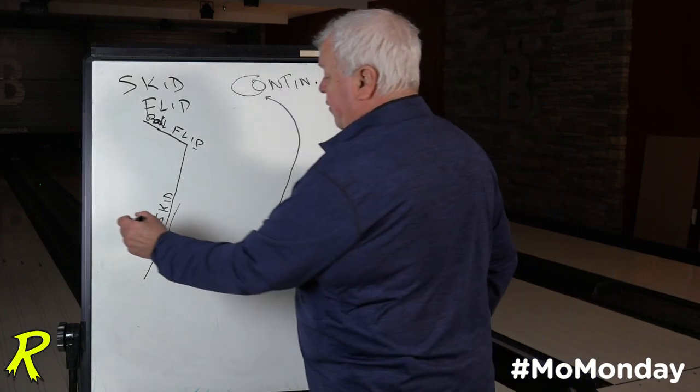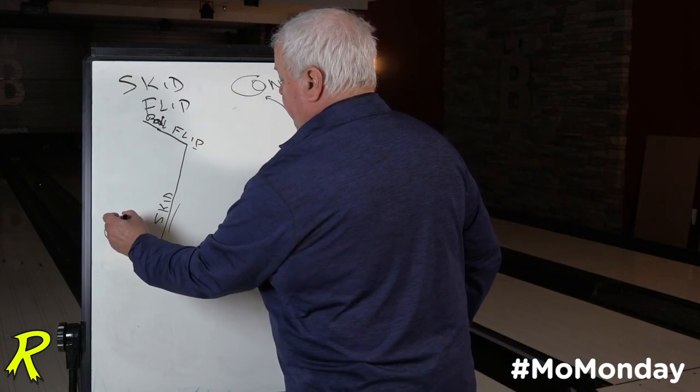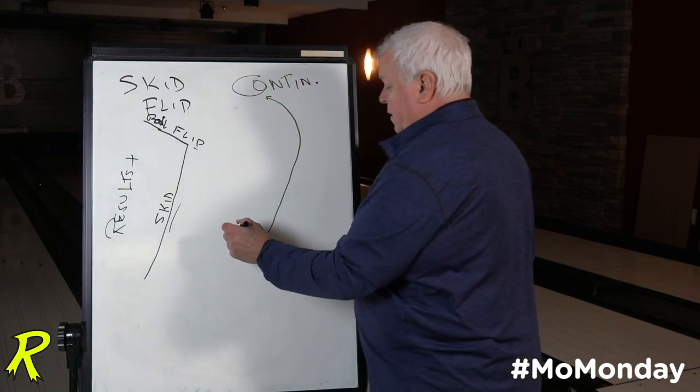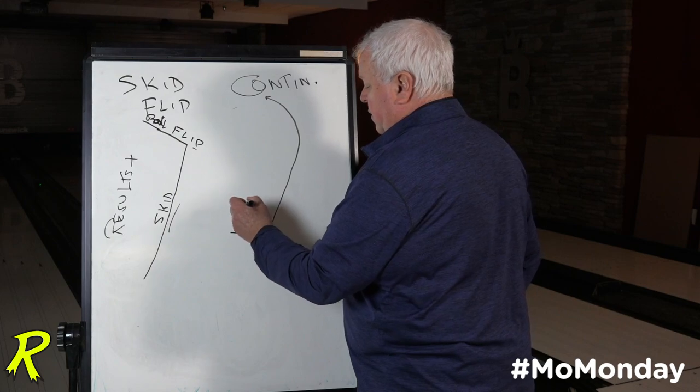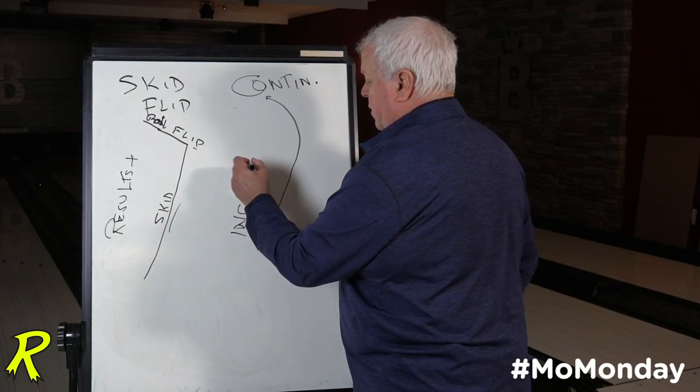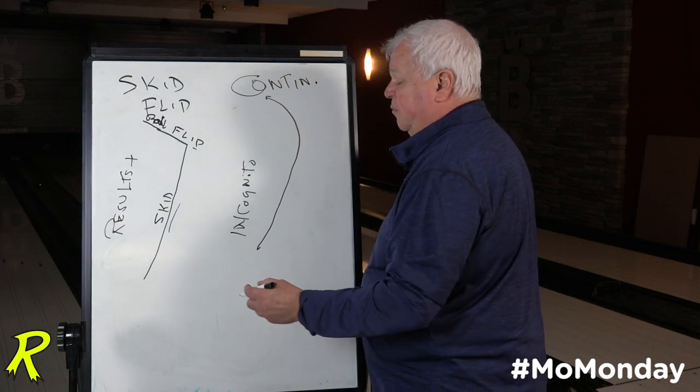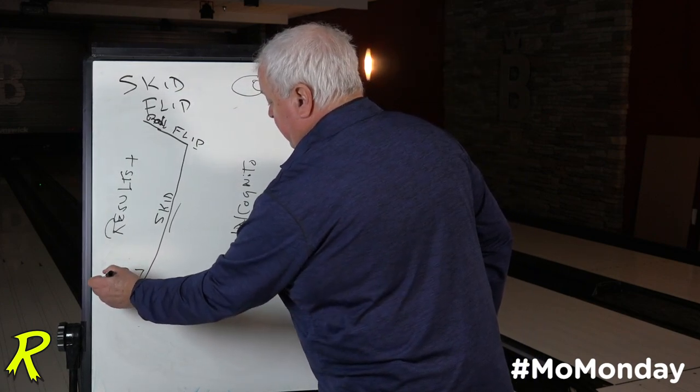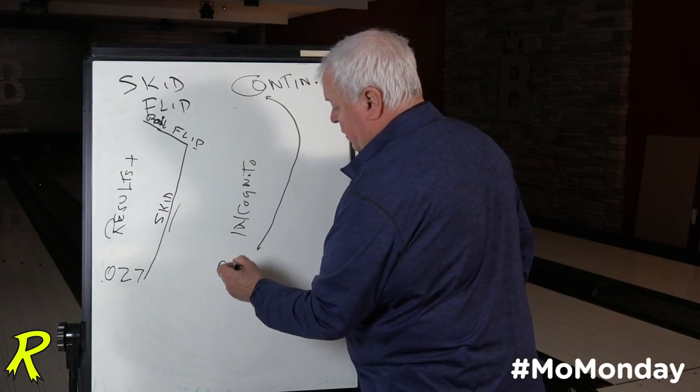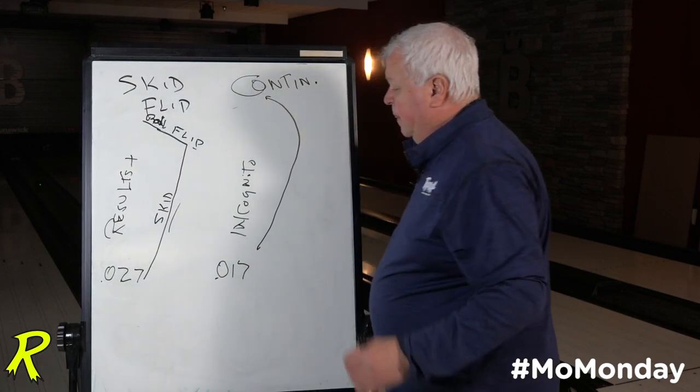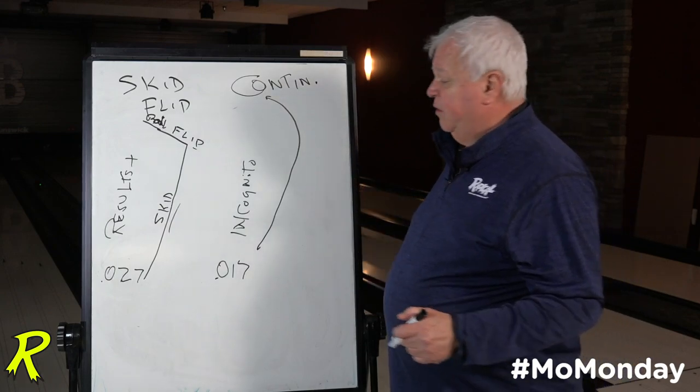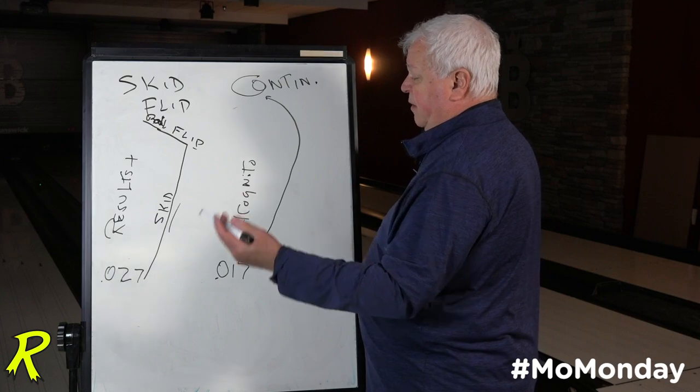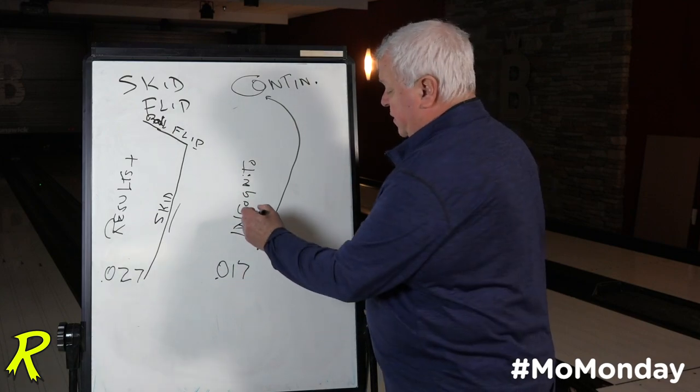Let's use an example. Let's talk about the Results Plus and the Incognito. The glaring difference between the two balls is the intermediate diff of 0.027 and 0.017. So both will get down the lane pretty good because of the coverstock similarities, meaning they're both pearlized, in this case the Incognito Pearl.